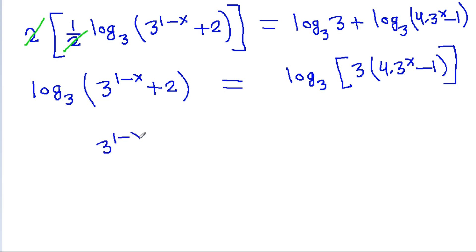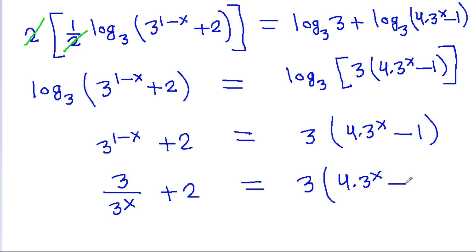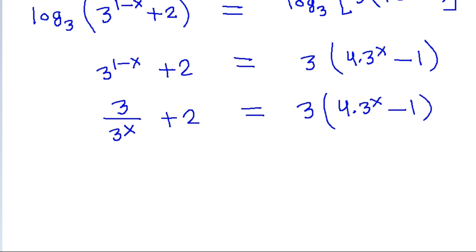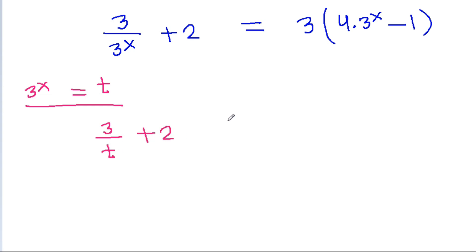So we equate: 3 power (1 minus x) plus 2 equals 3 times 4 into 3 power x minus 1. Then 3 power (1 minus x) plus 2 equals 3 times 4 into 3 power x minus 1, and 3 power (1 minus x) is 3 divided by 3 power x, so 3 by 3 power x plus 2 equals 3 times 4 into 3 power x minus 1. Taking t equal to 3 power x, we substitute.